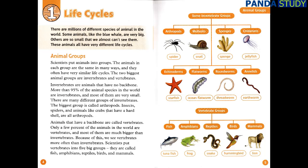Invertebrates are animals that have no backbone. More than 95% of the animal species in the world are invertebrates, and most of them are very small. There are many different groups of invertebrates. The biggest group is called arthropods. Insects, spiders, and animals like crabs that have a hard shell are all arthropods.